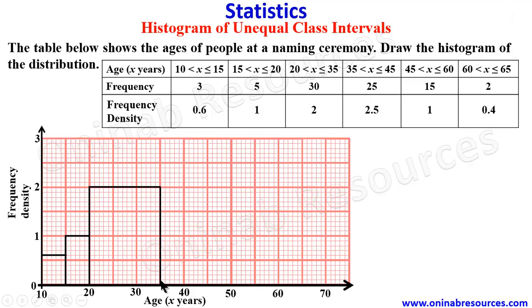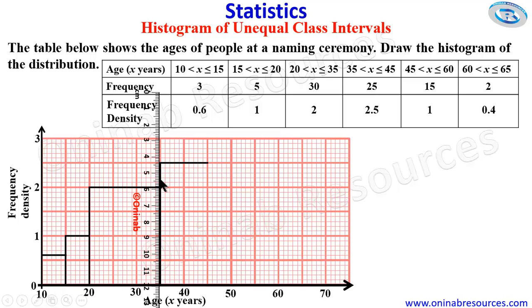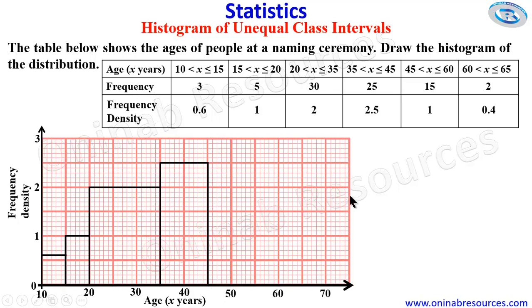The next interval is 35 to 45. The height is 2.5, so we place our ruler at 2.5 and draw the line. Remember it is from 35 to 45. We then complete the bar by bringing the sides down to the horizontal axis to get the bar for 35 to 45.